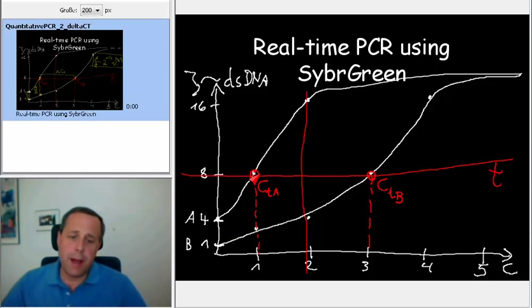So two more doublings means that from here on you need two more doublings, that's a fourfold amplification, in order to reach the same amount. And that's no wonder because the ratio of the templates A and B initially was fourfold. So the ratio was fourfold, and as I told you before, by the initial PCR cycles this ratio is being maintained. So even here when the first sample reaches the threshold that we defined, the ratio between the PCR products A and B is still fourfold.